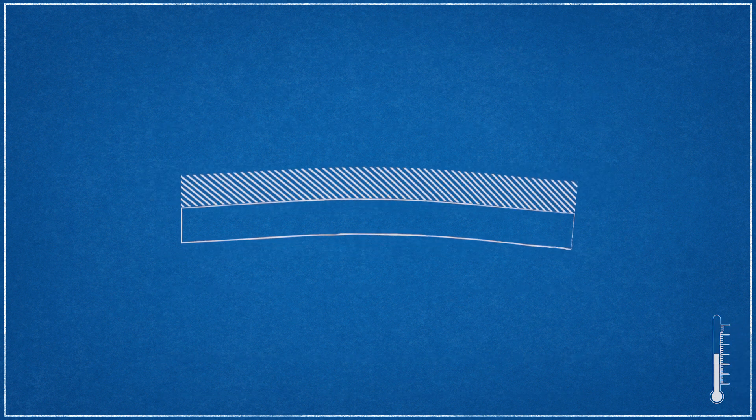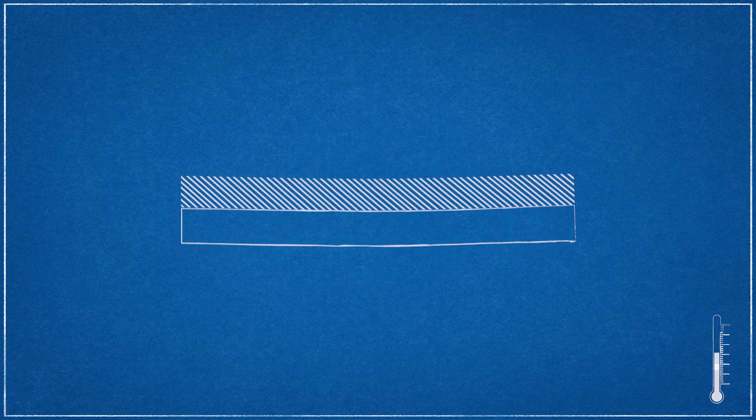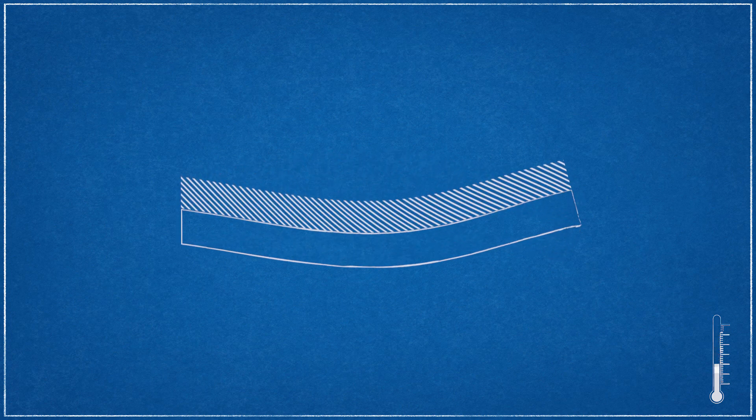Because brass expands more than steel, as a bimetallic strip warms up, it bends towards the steel side. It can also bend in the opposite direction if cooled below its initial temperature.